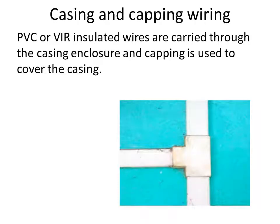The third type is casing and capping wiring. PVC or VIR insulated wires are carried through the casing. The casing is first fixed on the wall with gutties, then wire is drawn into the casing, and then capping is placed over the casing.